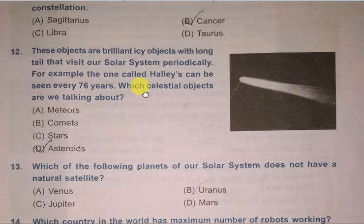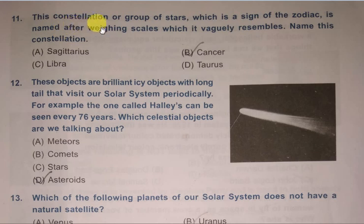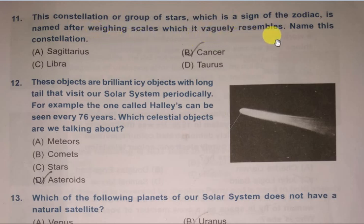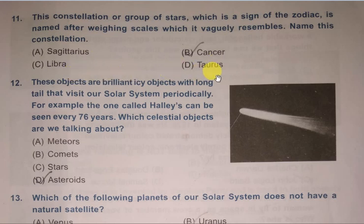Next question: This constellation or group of stars, which is a sign of the zodiac, is named after weighing scales, which it vaguely resembles. Name this constellation. Options are Sagittarius, Libra, and Taurus. The correct answer is Libra, C.